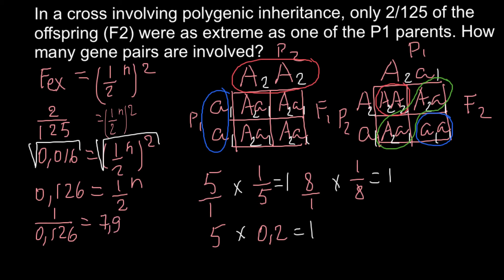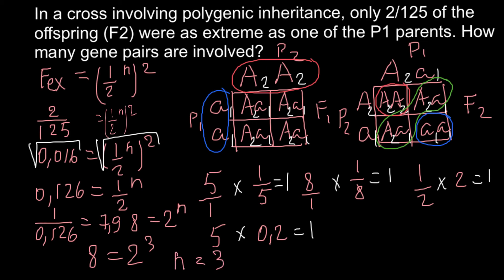So we have 8 on the left side equal to 2^n on the right side. Since 8 equals 2 raised to 3, n equals 3. This is our answer.